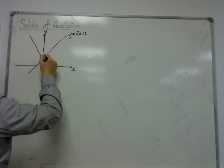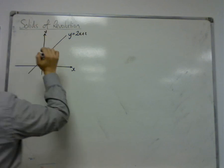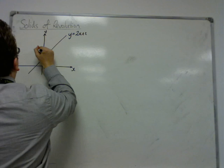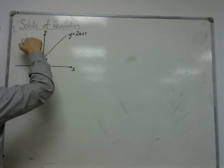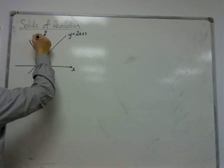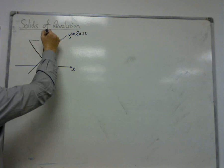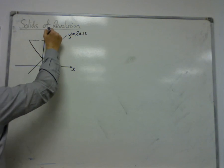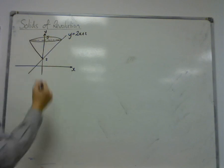So once rotated, it would look... I haven't drawn that particularly well. Okay, so let's say I'm going to rotate it to that point. Let's say that that is something like 5. So it creates this cone.